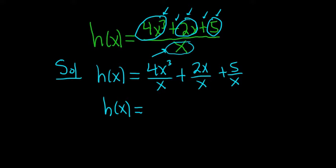Here we have x cubed over x, so one of the x's cancels, so we get x squared. Here these cancel, so we get 2. And we do have to differentiate this, and it's 5 over x.